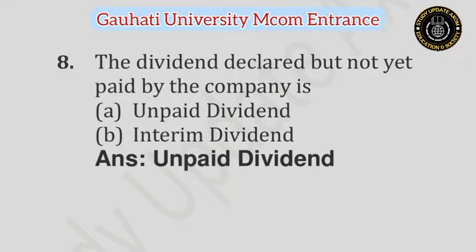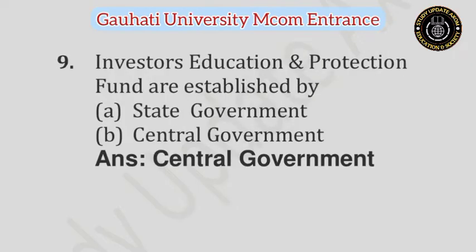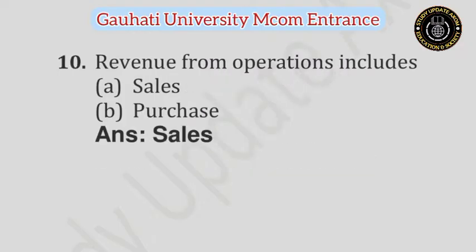Question number 8: The dividend declared but not yet paid by the company is — Option A: Unpaid Dividend, Option B: Interim Dividend. Answer is Unpaid Dividend. Question number 9: Investor Education and Protection Fund are established by — Option A: State Government, Option B: Central Government. Answer is Central Government. Question number 10: Revenue from operation includes — Option A: Sales, Option B: Purchase. Answer is Sales.